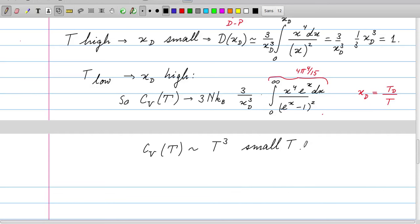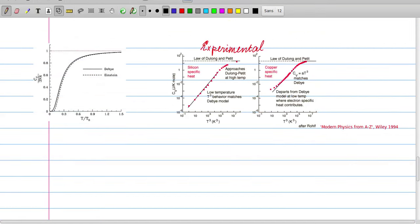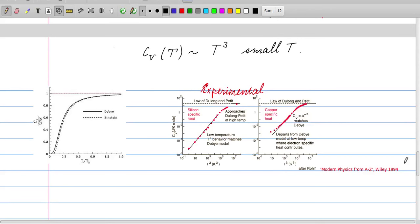So do these results make sense when we look at experiments? We have two models, the Einstein model and the Debye model. You see that at high temperatures they both give more or less similar results. At low temperatures it's not so clear from this picture, but then there is clear deviation between the Einstein and the Debye result.